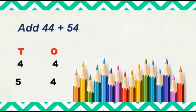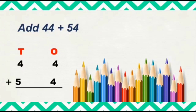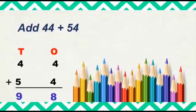Do not forget to write the plus sign as we are doing addition. Now let's add from the 1s place. What are the numbers at 1s place? 4 plus 4. So what is 4 plus 4, children? Yes, 8. Next we will move to the 10s column. What is 4 plus 5? 4 plus 5 is 9. So the total of 44 plus 54 is 98.